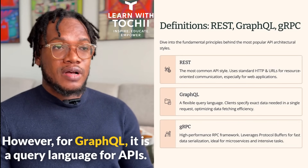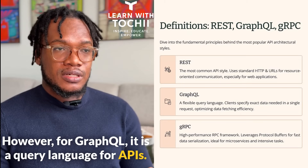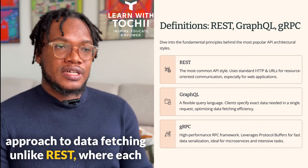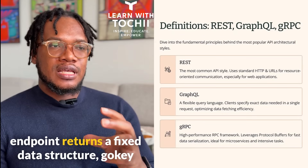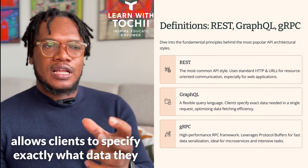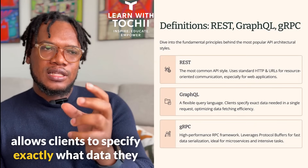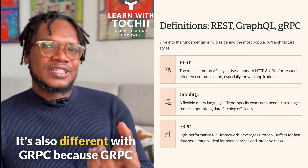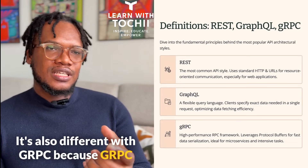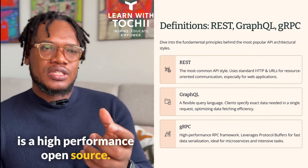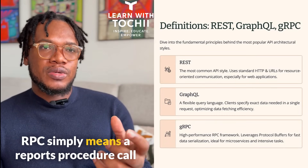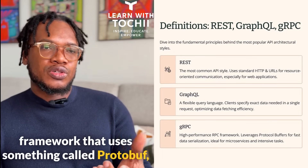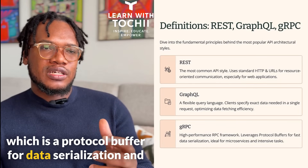However, for GraphQL, it is a query language for APIs that provides a more flexible and efficient approach to data fetching. Unlike REST, where each endpoint returns a fixed data structure, GraphQL allows clients to specify exactly what data they need in a single request. It's also different with gRPC because gRPC is a high-performance, open-source RPC — a Remote Procedure Call framework — that uses something called Protobufs, which is a protocol buffer for data serialization.